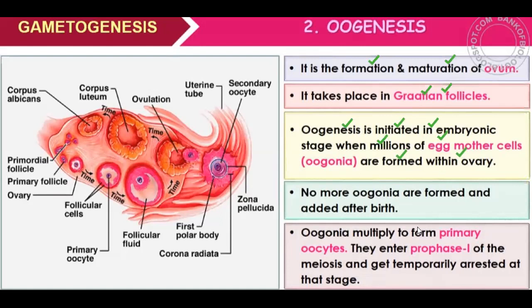After birth, no new oogenesis forms. These are the deployed cells — they are the mother cells. Mother cells always form gametes after meiosis.